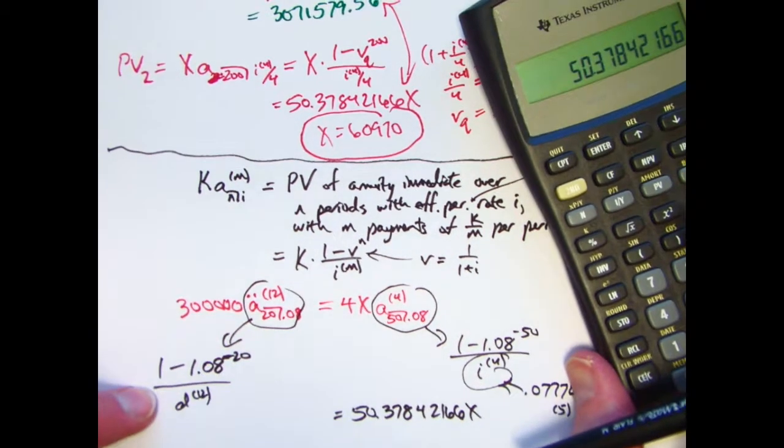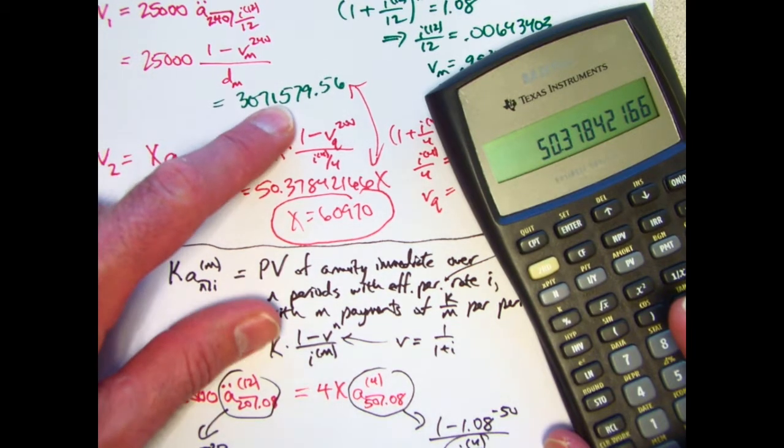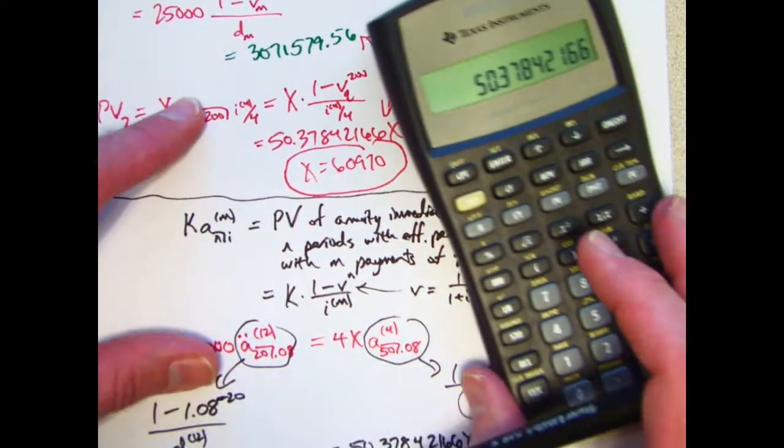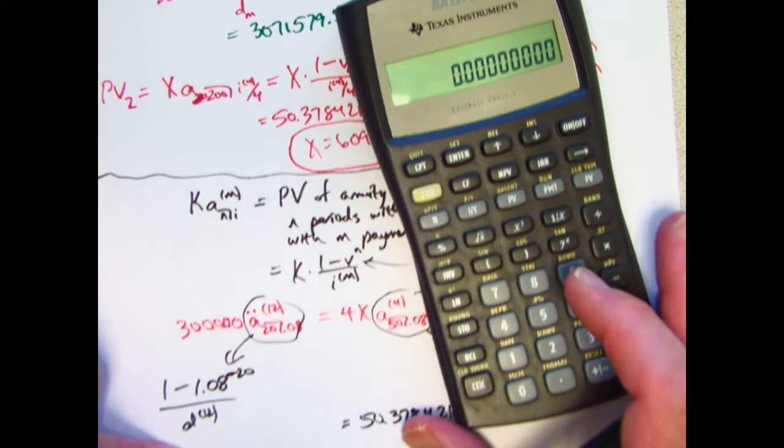Okay, and for the other side, I better get this 3,071,579.56. Let's see if that happens. If I'm going to do that, I need to find D12.